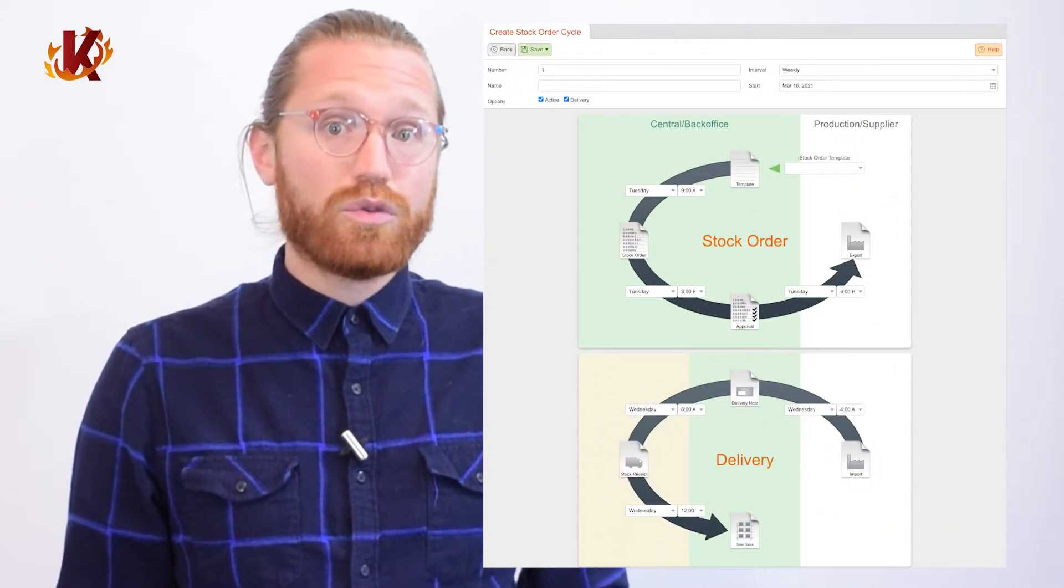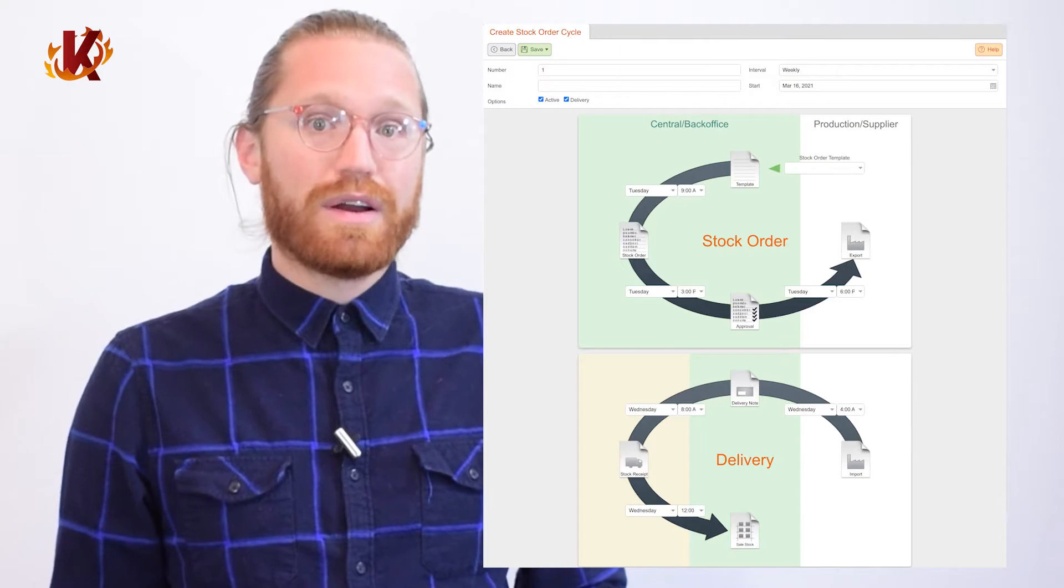Each product you have in your inventory is tied to the appropriate supplier in the system. Once you place a purchase order for an item, you'll later be prompted to confirm successful delivery with the stock receipt. This automatically updates your inventory counts with a new order.